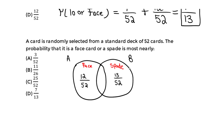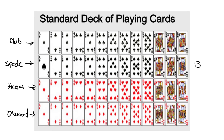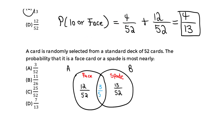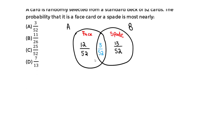Now the last piece: a face card and a spade. Both of these can occur simultaneously. Looking at the deck, we need cards that are both a spade and a face card — that means the jack, queen, and king of spades. So it's simply 3 out of 52 — that's the probability of both occurring simultaneously. A quick shortcut is to multiply the individual probabilities, and you should also get 3 out of 52.